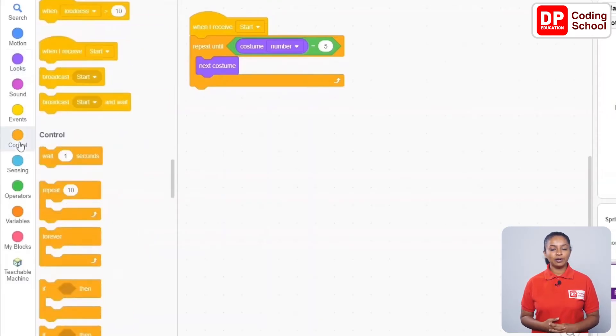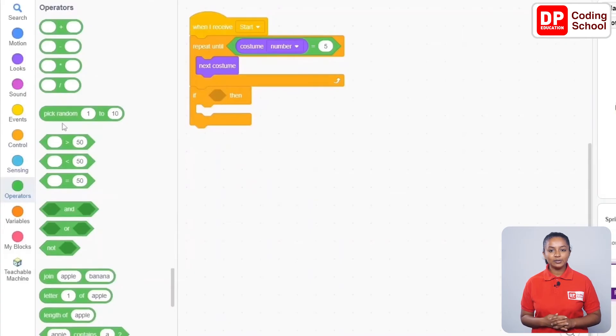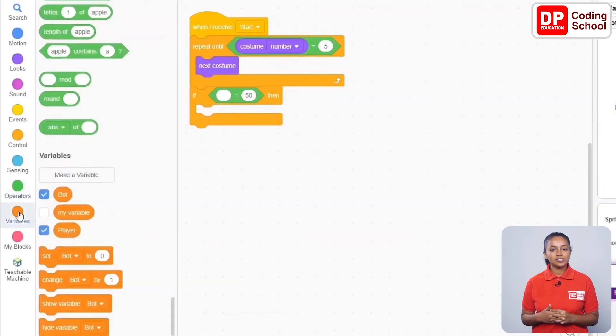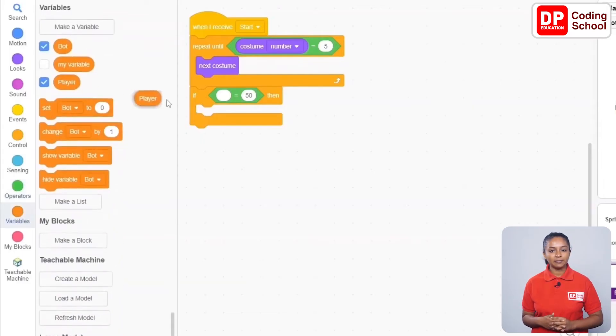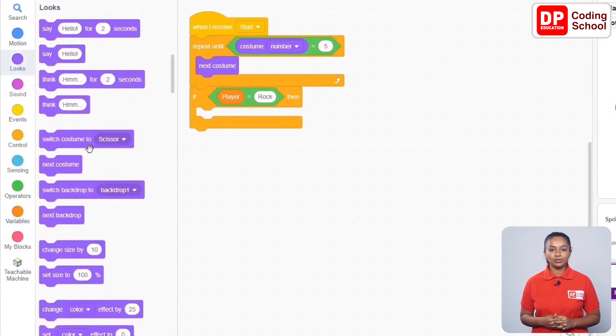Let's drag an if code block under control. For the condition of this if code block, connect a code block with the equal sign in operators. Drag a player code block under variables to the left side of the equal sign. Let's give the value rock to the right side. Now I drag a switch costume to rock code block under looks into this if code block.